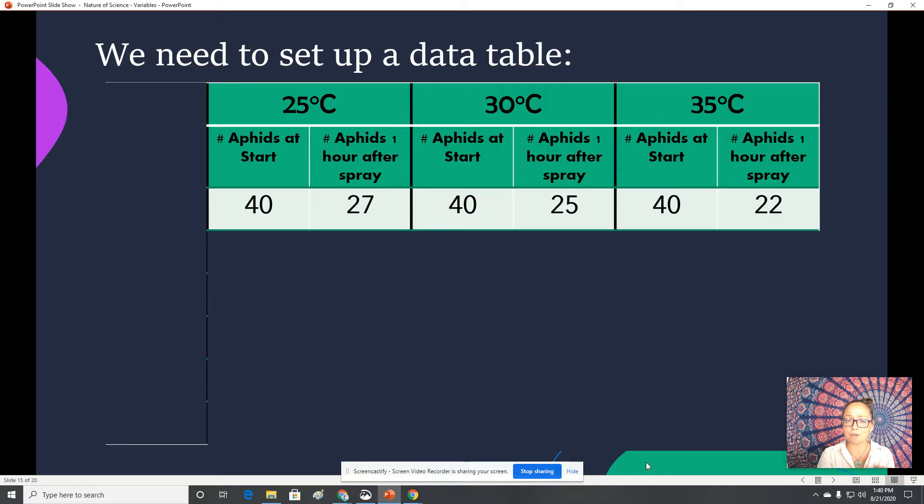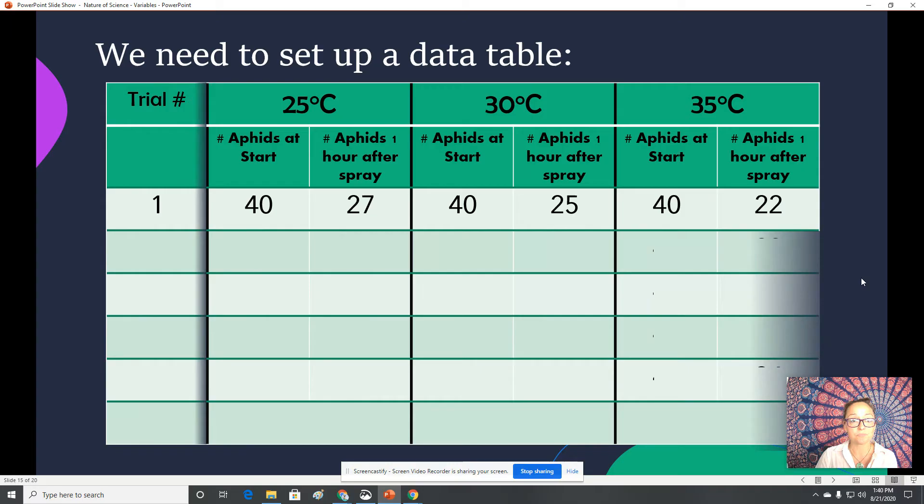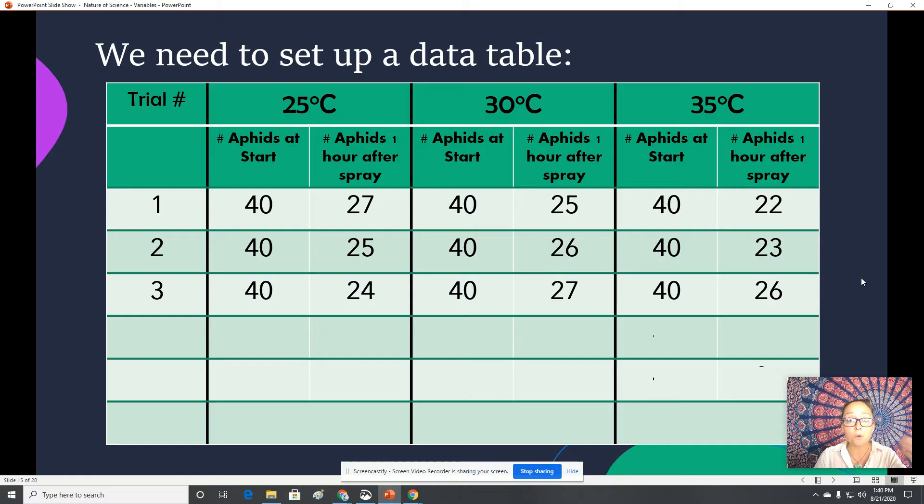However, this isn't the most convincing data. In science, if you have the opportunity and the resources, it's best to repeat your experiment and confirm it. Run multiple trials. And so therefore, the more data you have, the more convincing and reliable your data and your conclusions are.